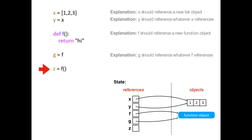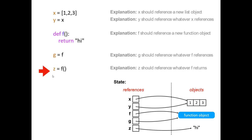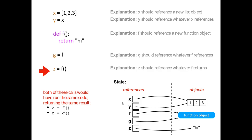Then we have z. z equals f with parentheses calls the function f — it traces the arrow from f to the function object, runs it, gets a return value, and stores it in z. In this case it's returning the string 'hi'. Both the line z equals f() and z equals g() do exactly the same thing, because f and g are just names — aliases — for the very same function object.